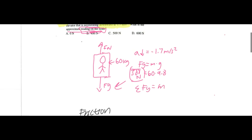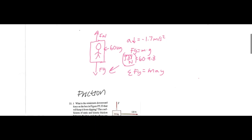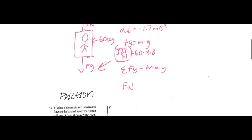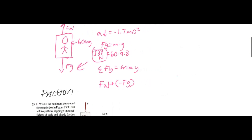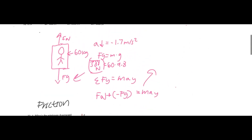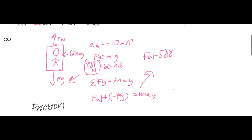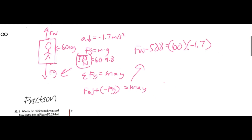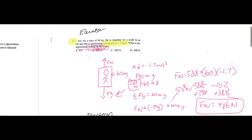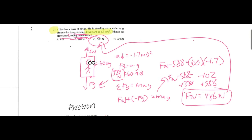We know that the sum of all the forces in the y is equivalent to Ma, the acceleration in the y direction. The gravity will work in the negative direction. So Fn minus 588 equals mass times acceleration: 60 times negative 1.7. If we multiply this out we'll get negative 102 equals Fn minus 588. Then we add 588 to each side and get Fn, which is our answer — that's going to be 486 newtons. It's multiple choice, so rounding it, it's going to be C.